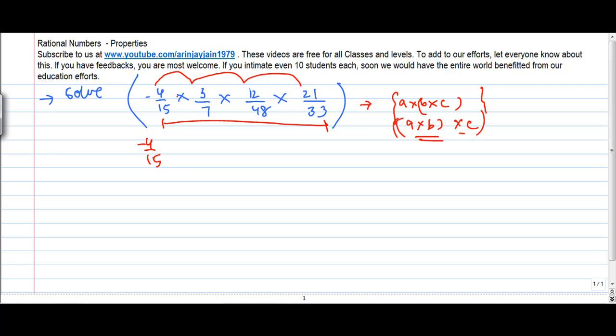But 7 does not go into 4. However, if I see this, both of them are divisible by each of these numbers. So I put this as 12/48 times 3/7 times 21/33.